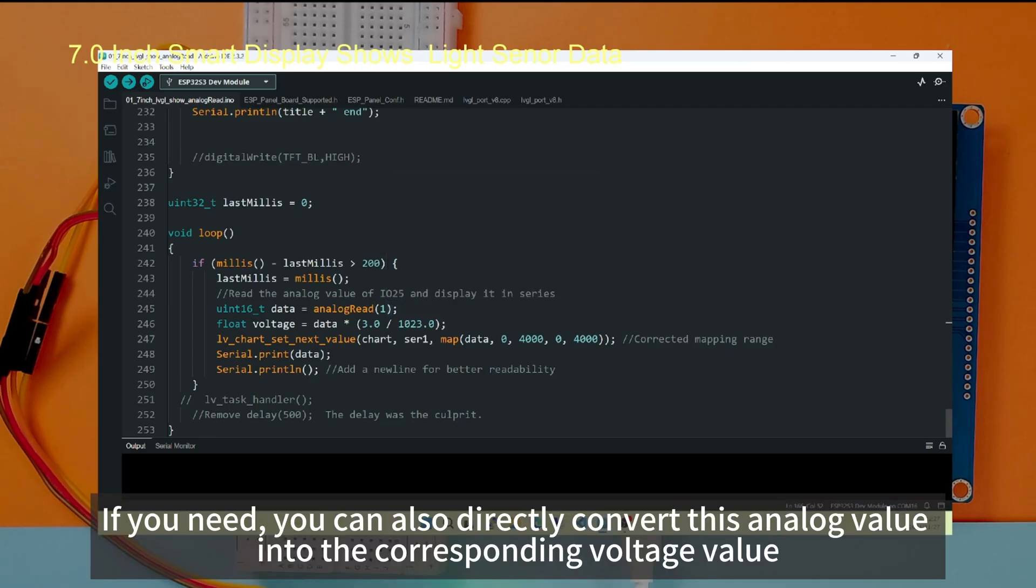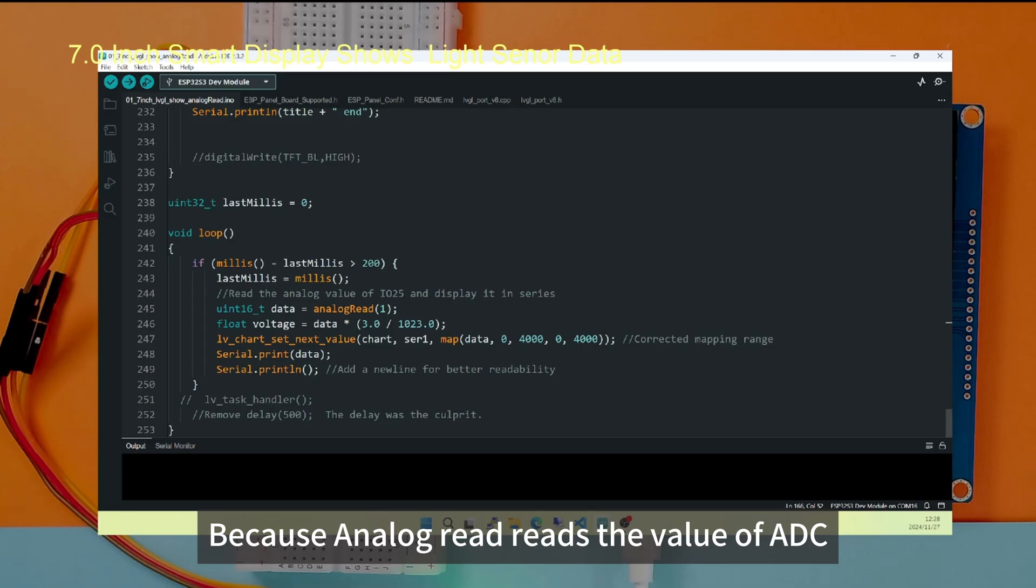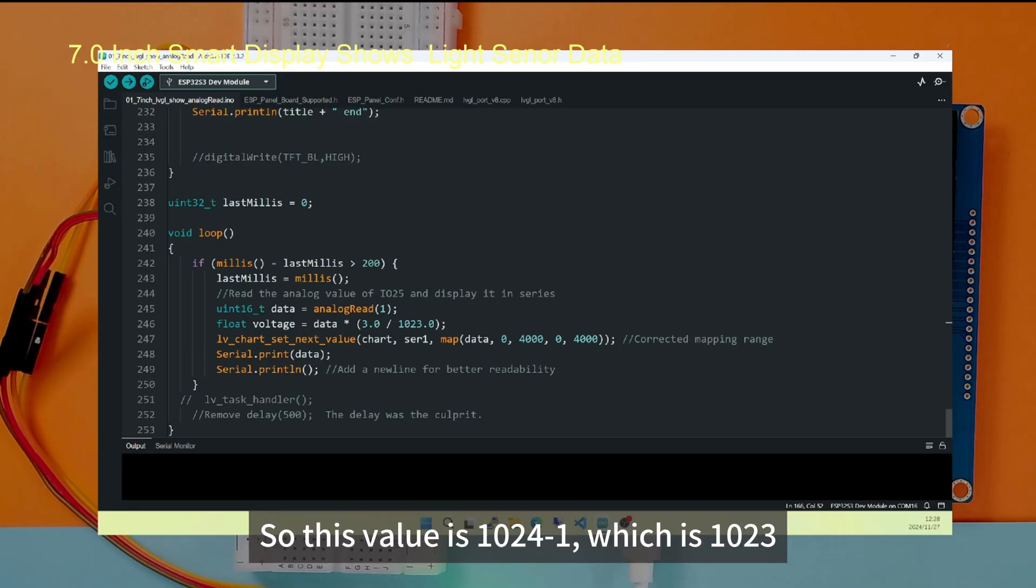If you need, you can also directly convert this analog value into the corresponding voltage value. Because analog read reads the value of ADC. The ADC of the ESP32-S3 here is a 10-bit ADC. So this value is 1024 to 1, which is 1023.